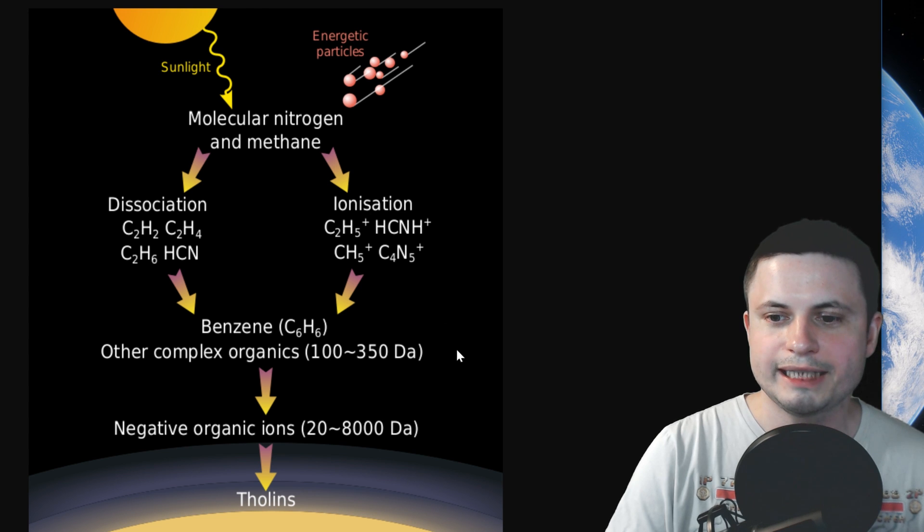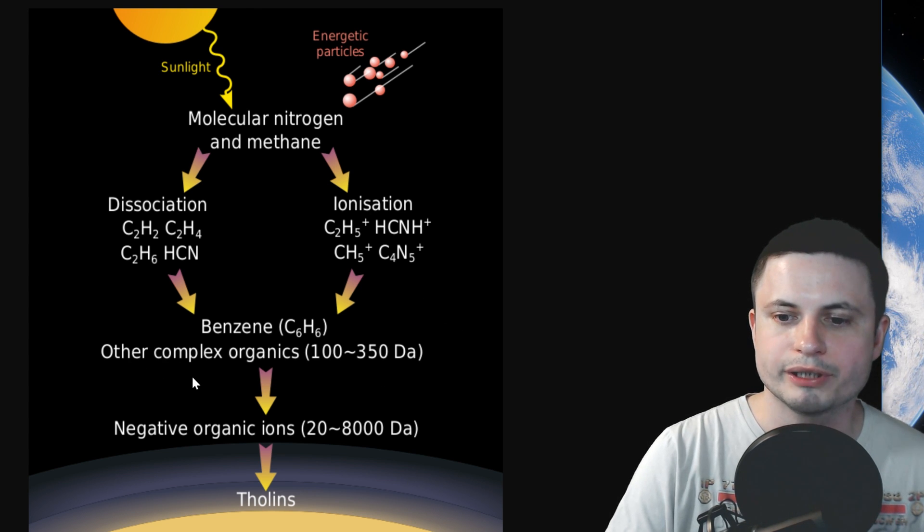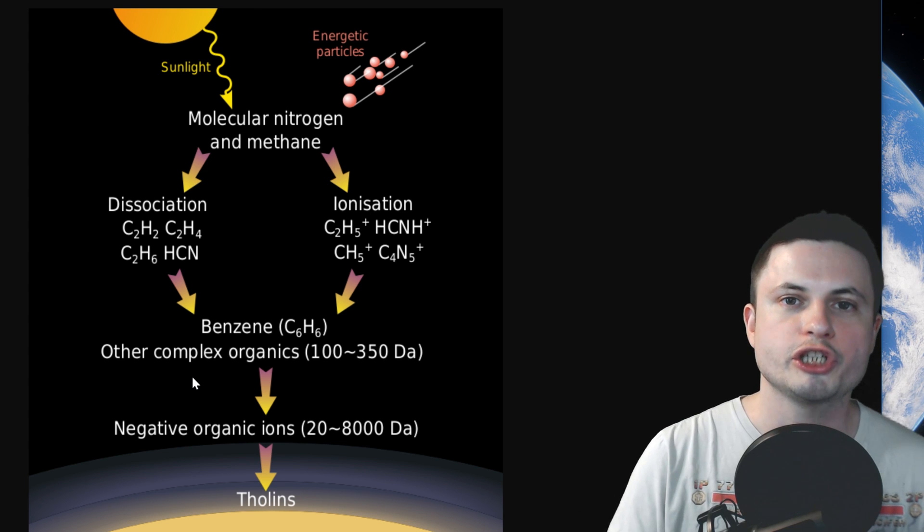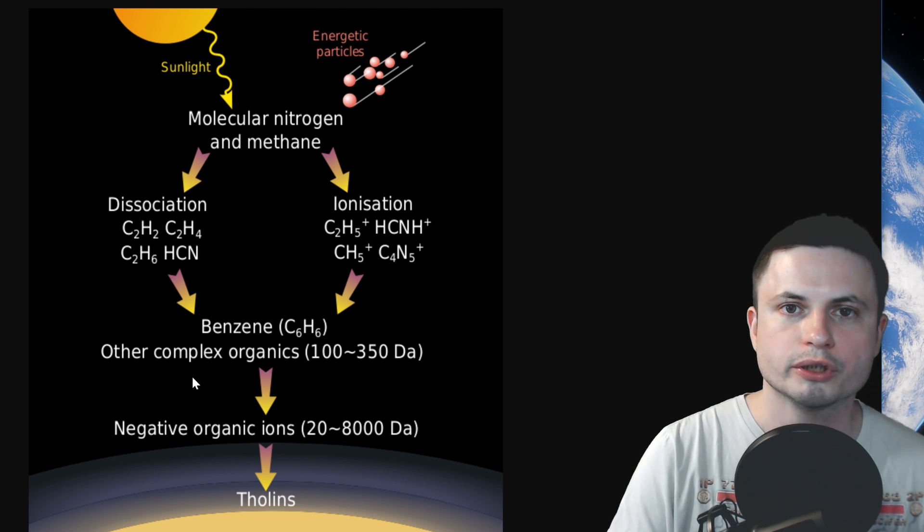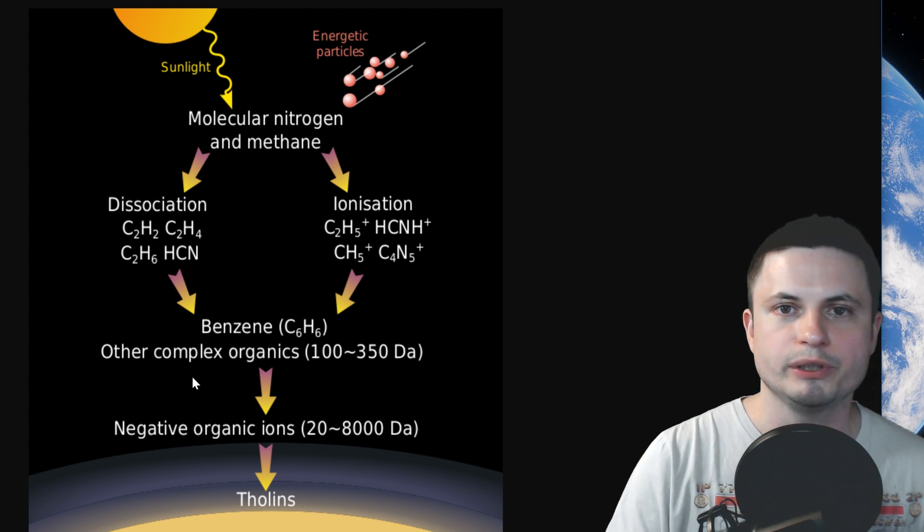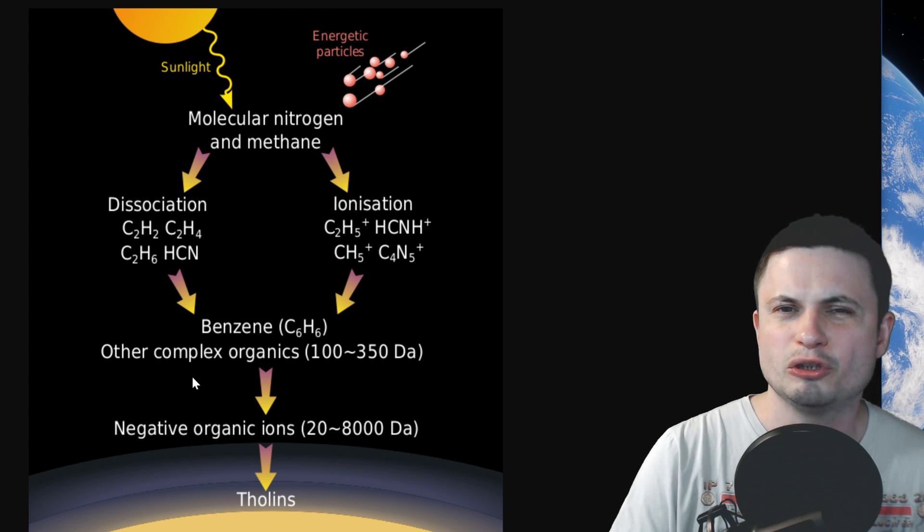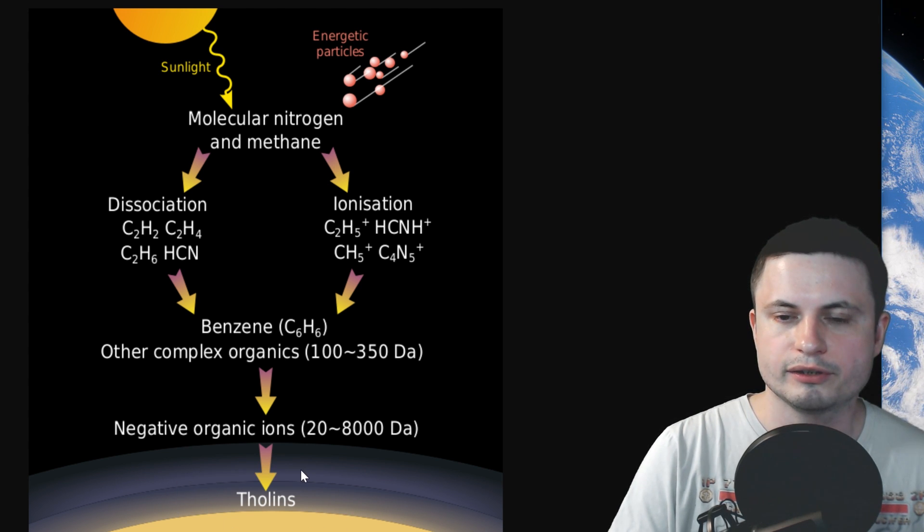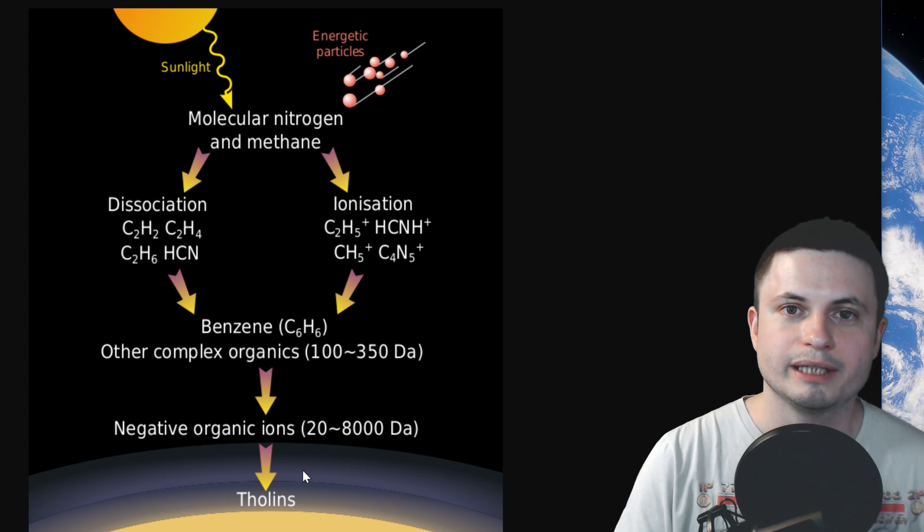Which will eventually lead to complex organic molecules and then eventually form these really, really long, disordered chains of organic complex molecules. And these chains, these ridiculously complex chains that don't really have a structure per se, eventually form Tholines, which are normally brownish in color.